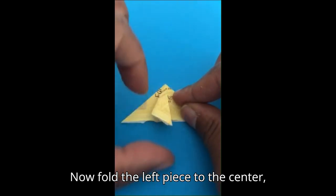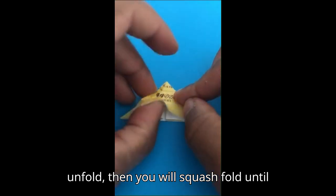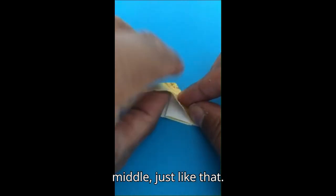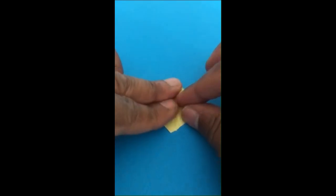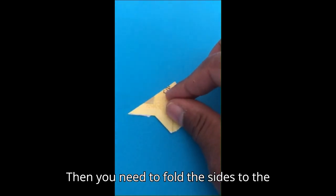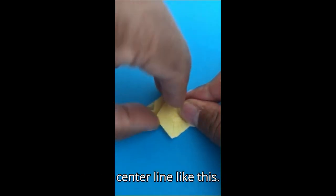Now fold the left piece to the center, unfold, then squash fold until you have a large nose-like shape in the middle. Just like that. Then, you need to fold the sides to the center line, like this.